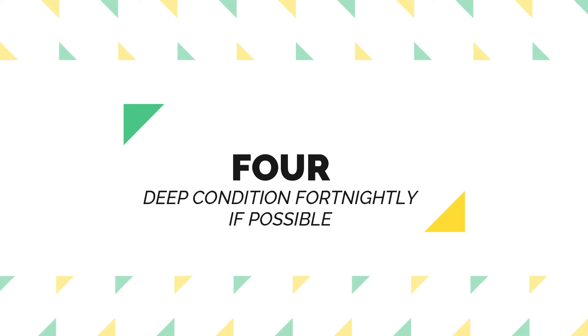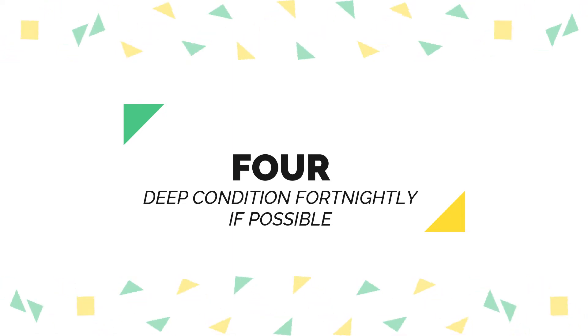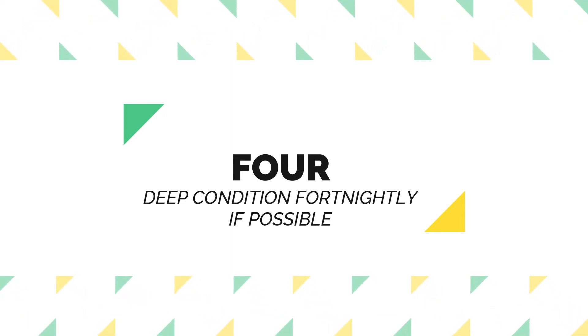Number four: deep condition your hair to retain moisture. Deep condition every two weeks at minimum — our hair thrives with regular deep conditioning treatments. This will keep your hair healthy, bouncy, and shiny, and will prevent snagging and tangles. Get a deep conditioner that works well for your hair and make sure you do it regularly. It helps to soften the hair and makes the coils shine through.